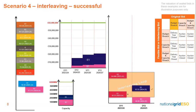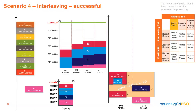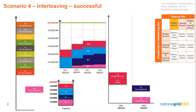Bid E1 is provisionally accepted within the budget and capacity cap. Bid A1 is also provisionally accepted within the budget and capacity limits. Finally, bid D2 fits within both the budget and capacity cap, and it also clears up bid A1 provisionally. Interleaving here is successful, so bid E1 will clear up bid B1, and the auction will continue.